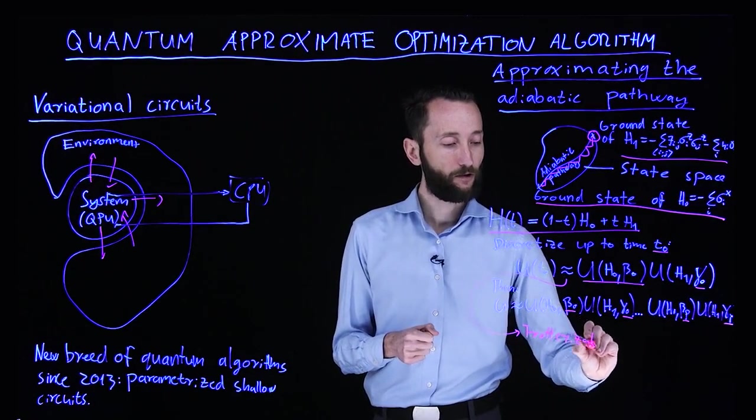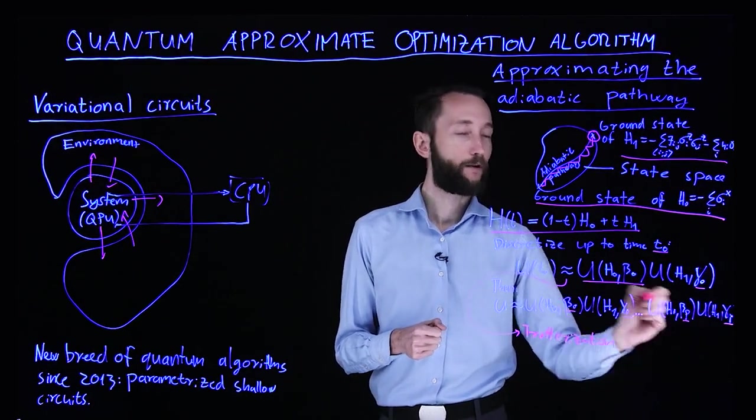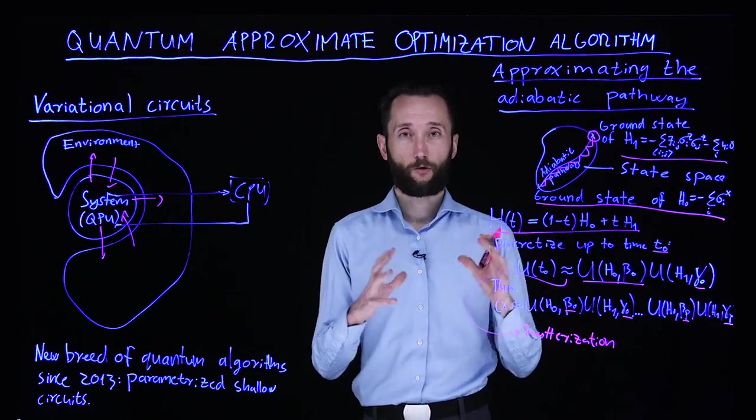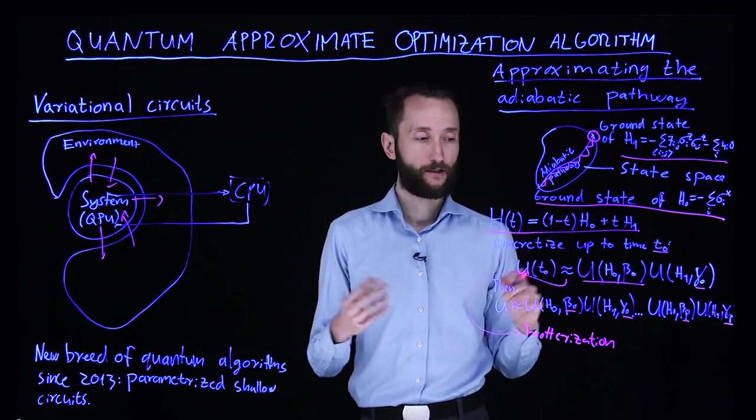You can control the accuracy by increasing the p. The more steps you have in the discretization, the more accurate your optimization is going to be.